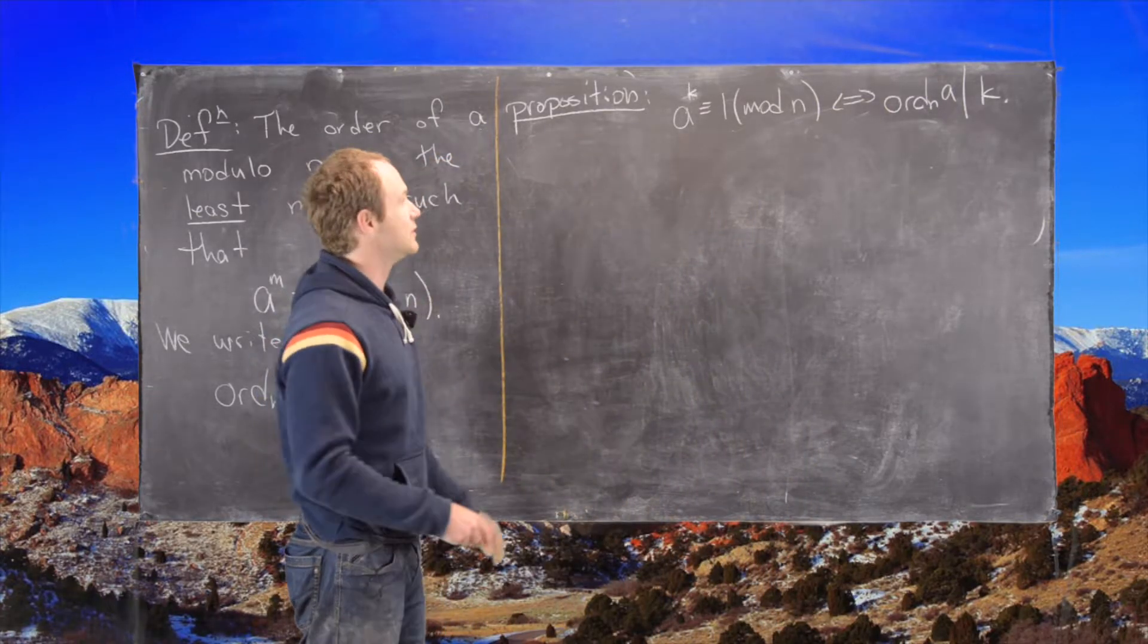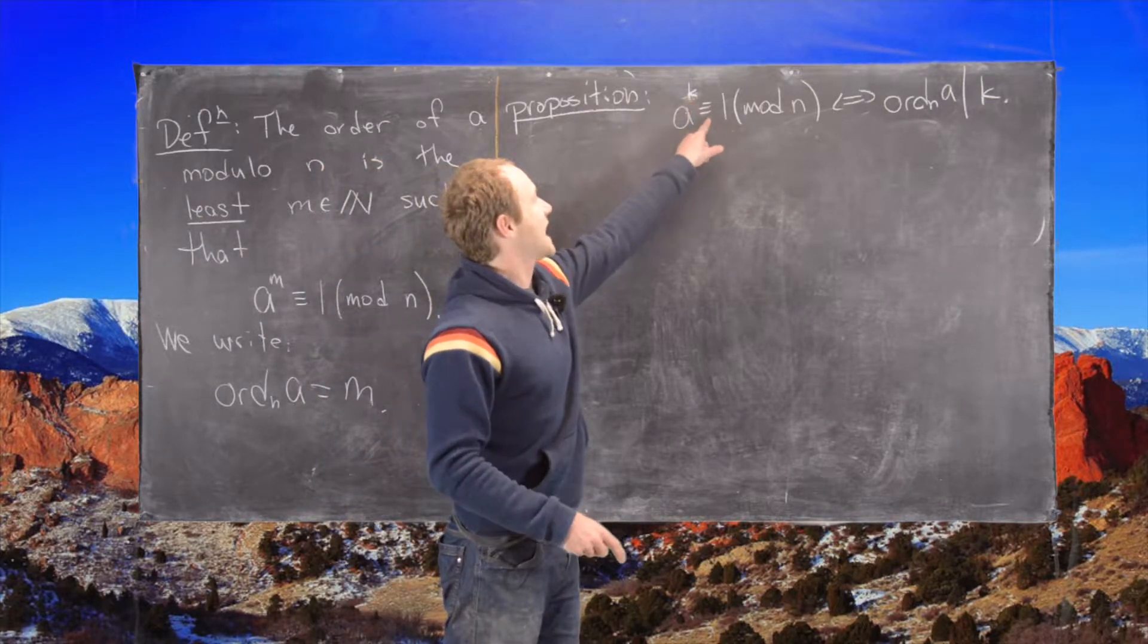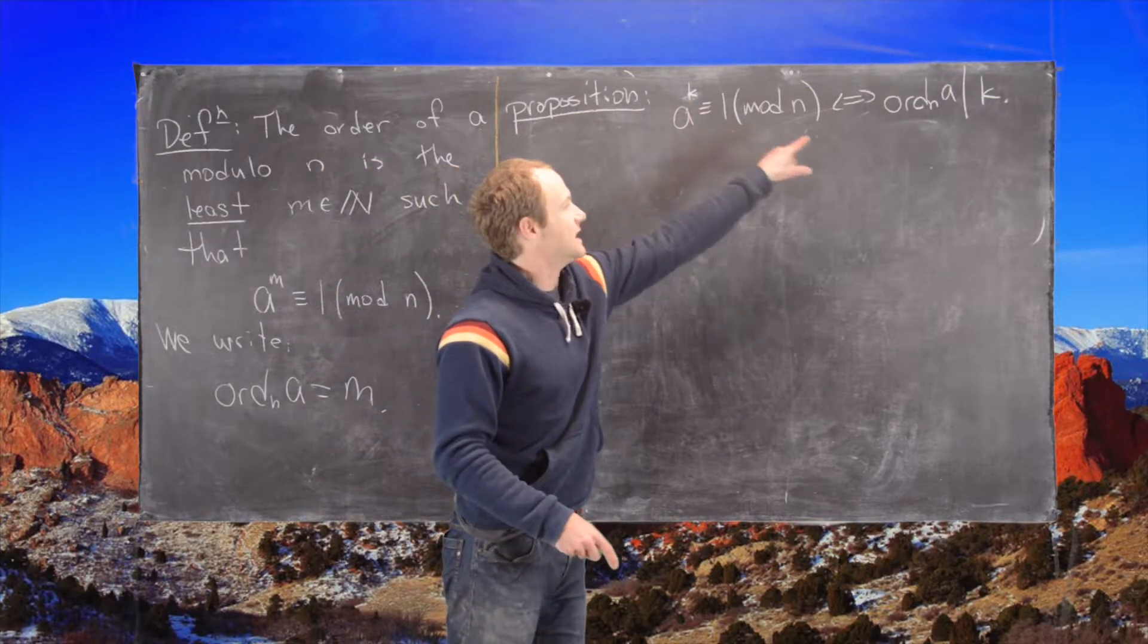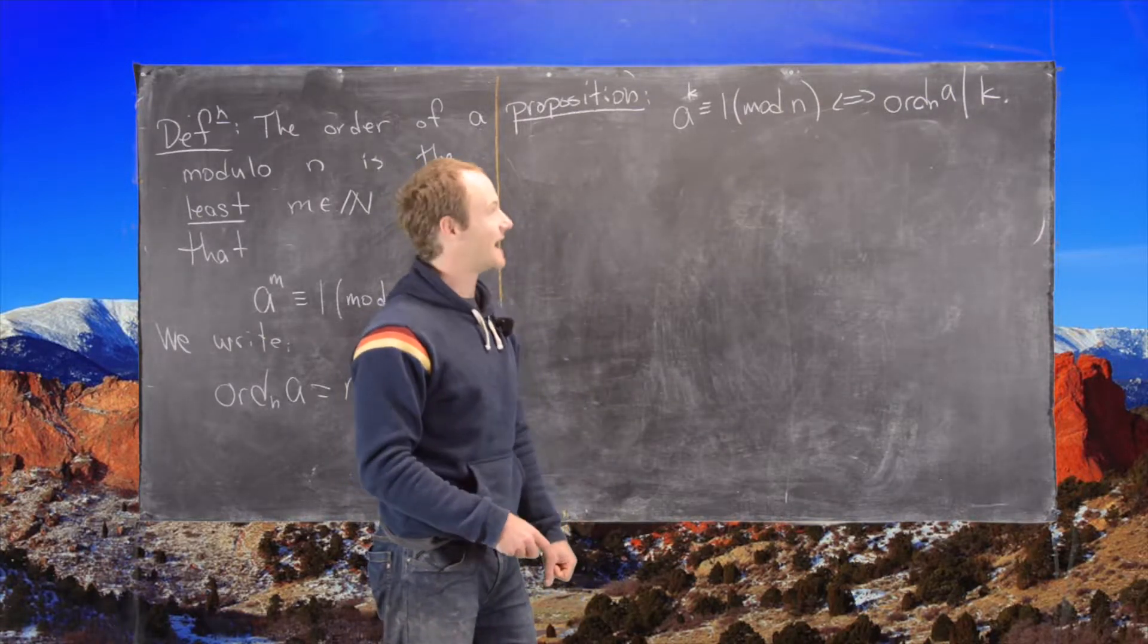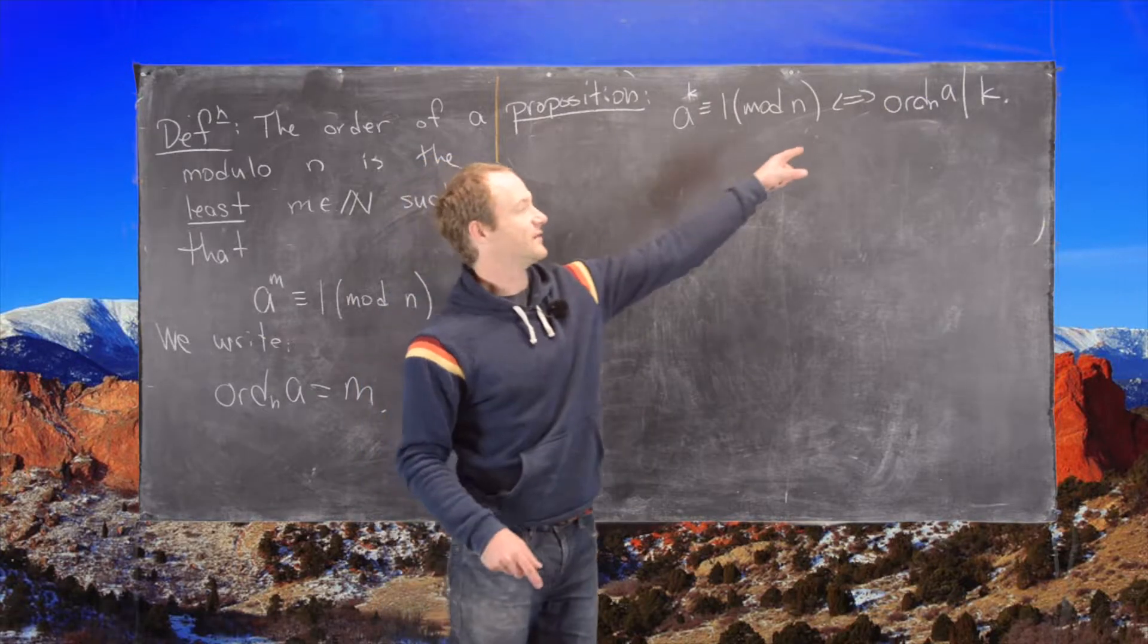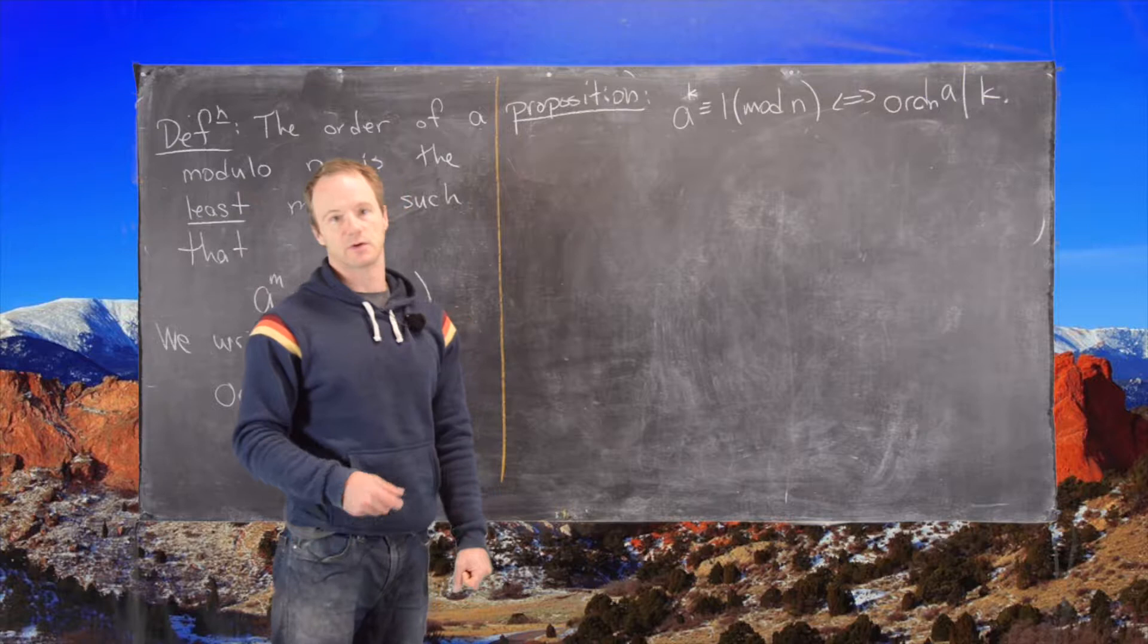So the proposition that we want to prove is that if a to the k is congruent to 1 mod n, then the order of a mod n divides k, and vice versa. If we have that division property, then a to the k is congruent to 1 mod n.